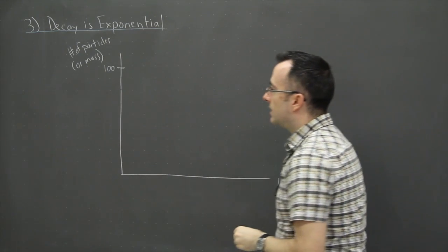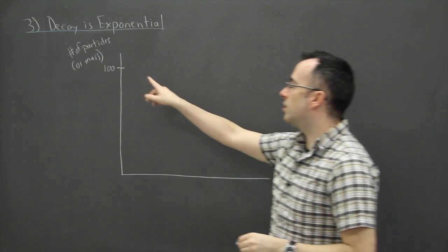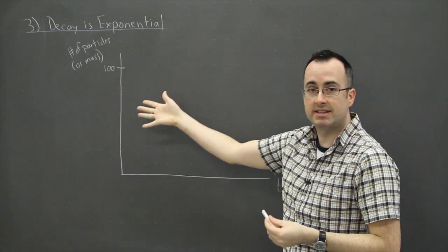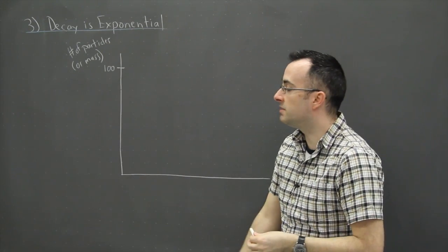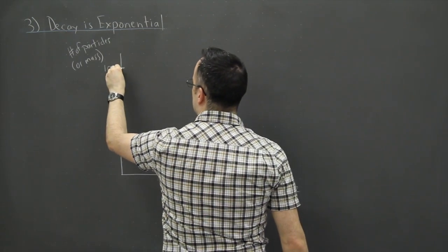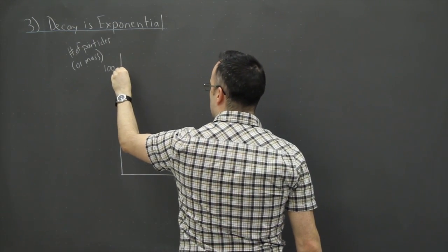So what ends up happening then is that the number of particles that there are, if it undergoes decay, so we're assuming this thing is radioactive, which means it gives off particles. So this then, if you look at the shape of this over time, it's actually going to go like this.